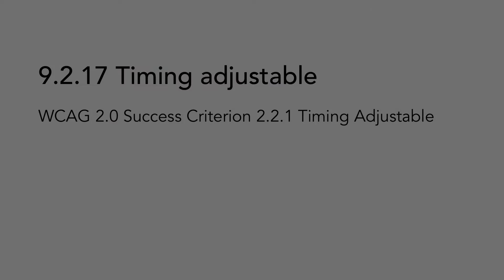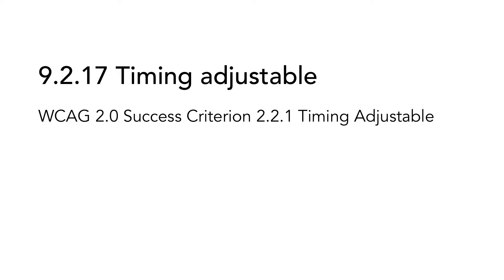If the user needs to use a special command or mode to get past this object, you need to clearly inform the user. And remember, this information needs to be displayed for all users navigating with a keyboard, not only screen reader users. If this success criterion is not met, it can hinder users from accessing large parts of the website.